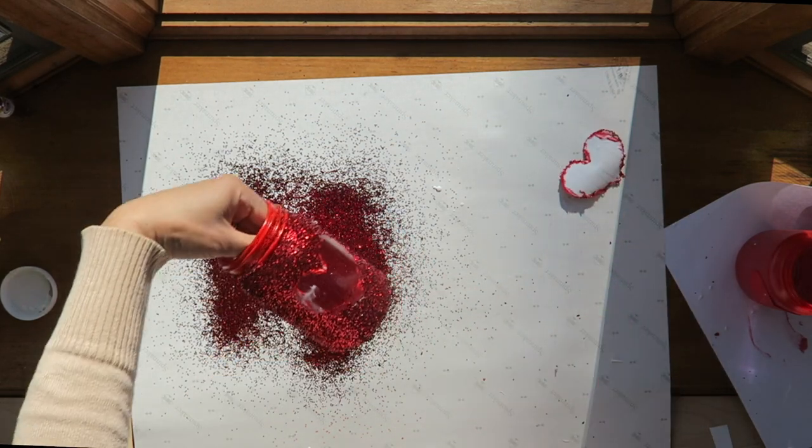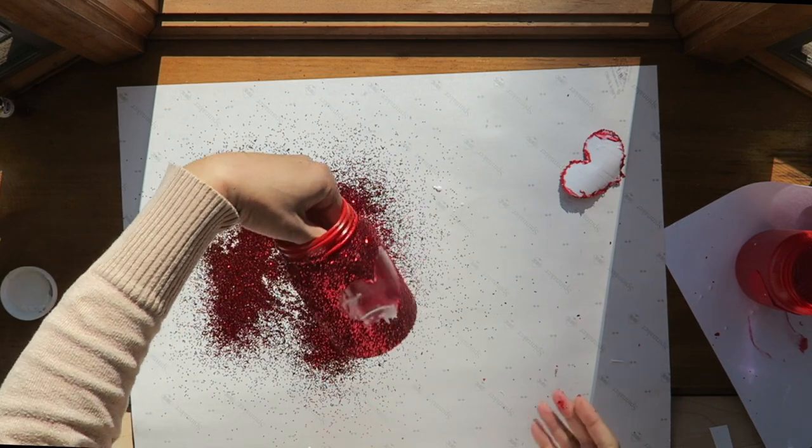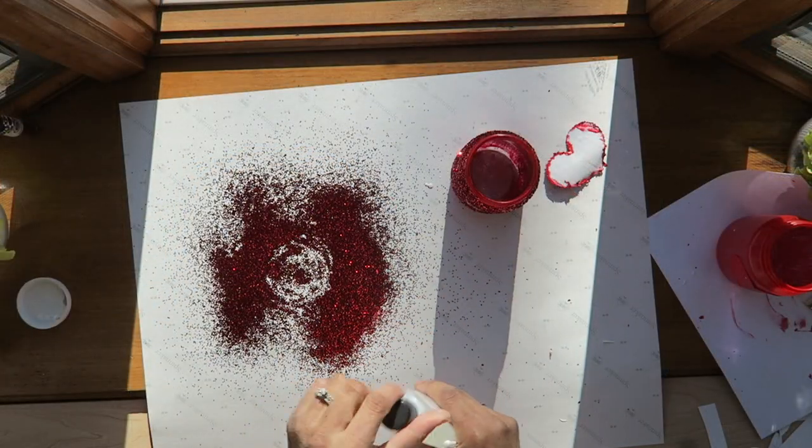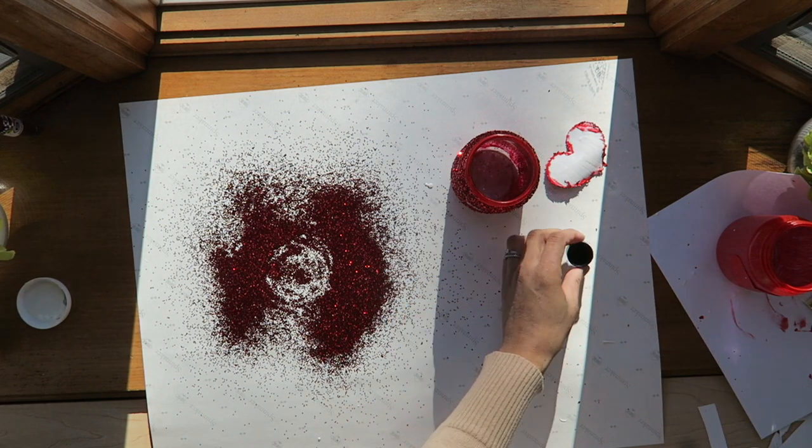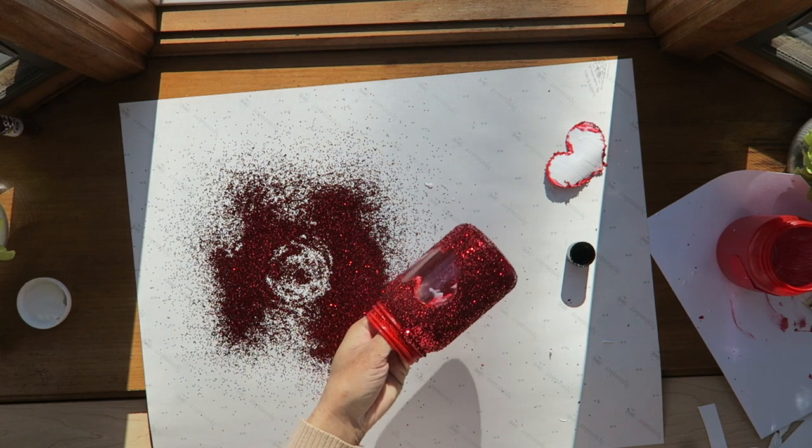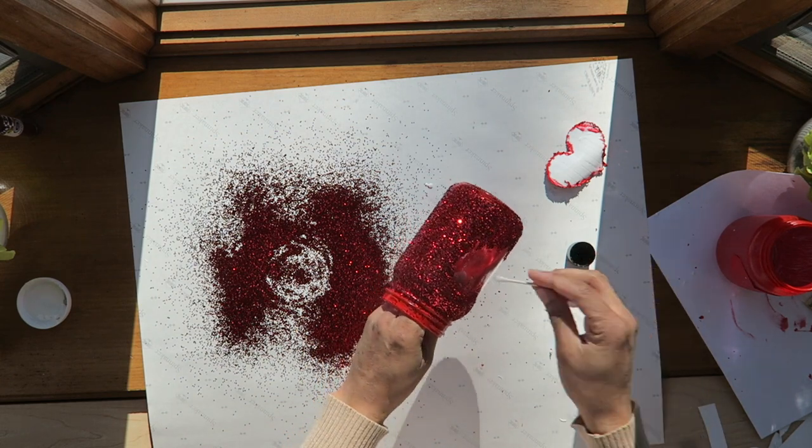After carefully peeling off the heart, I found that some of the paint and the Mod Podge had seeped underneath, so I used nail polish remover and some Q-tips and went over and wiped that off. You could either use this or some alcohol would probably work fine too.